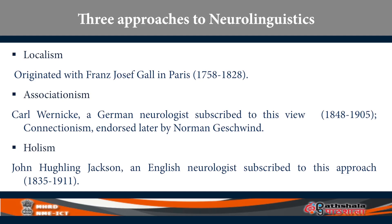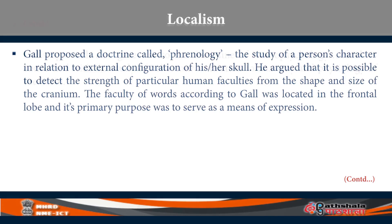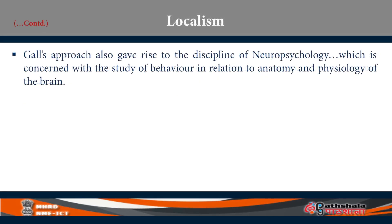I will say a little more about each of these three approaches. Localism is associated with Gall and the French neuro-position. Gall proposed a doctrine called phrenology, which is the study of a person's character in relation to the external configuration of his or her skull. He argued that it is possible to detect the strength of particular human faculties from the shape and size of the cranium. He also said that the faculty of words was located in the frontal lobe, primarily to serve as a means of expression. Gall's approach gave rise to the discipline of neuropsychology, concerned with the study of behaviour in relation to anatomy and physiology of the brain.